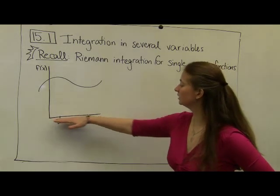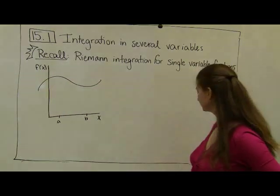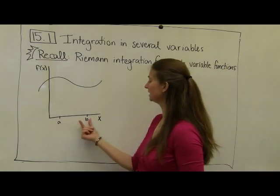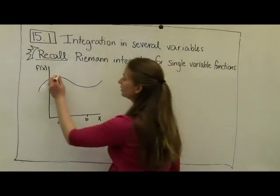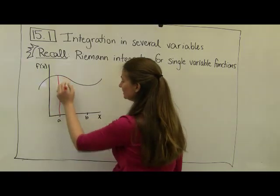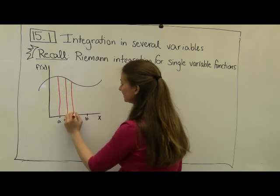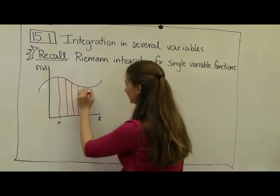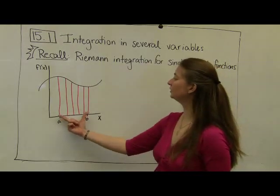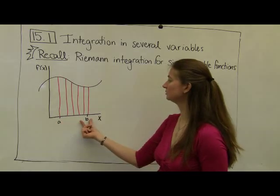Let's say that I have a function here. Here's my x-axis, here's my y-axis, here's my function f of x, and I want to be able to integrate from x equals a to x equals b. The way that we started out talking about this is that we would break this interval [a, b] up into rectangular pieces. And this integral was the area under the curve between the values x equals a and x equals b.